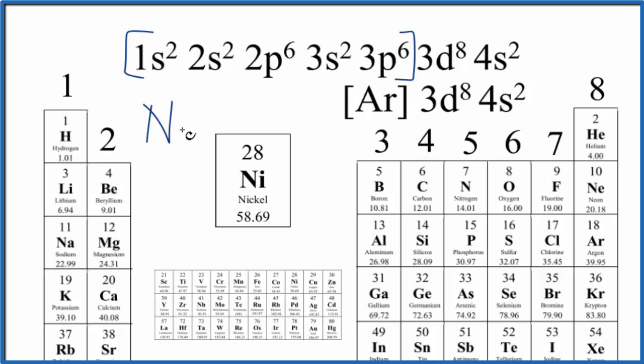Often it will form Ni 2 plus, so it will actually lose these 2 valence electrons here in the S. We would put a 0 there for this. Or it forms Ni 3 plus ions here, where it loses these 2, that becomes 0, and then this would become 7.